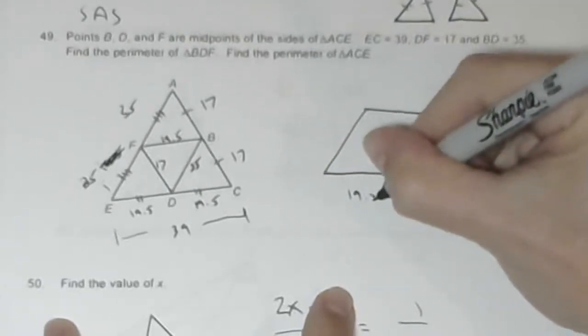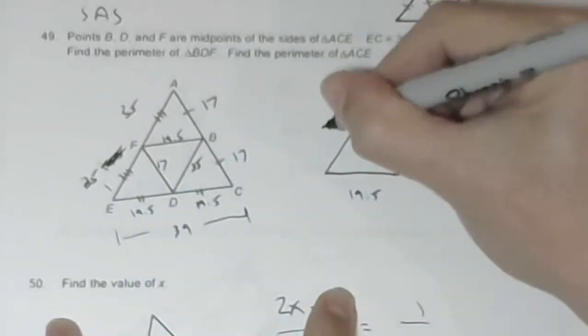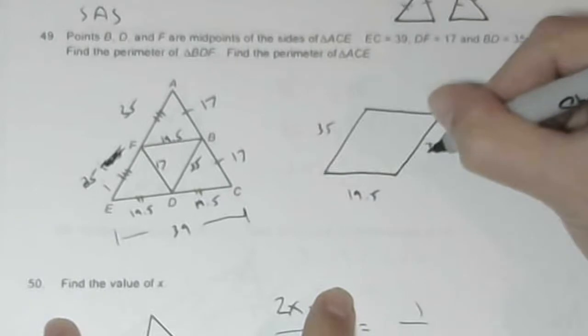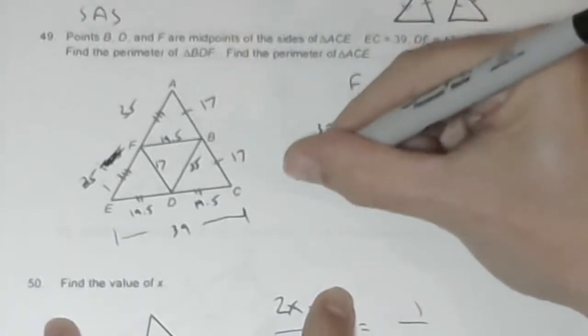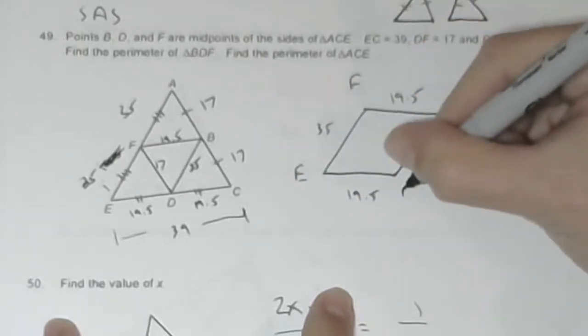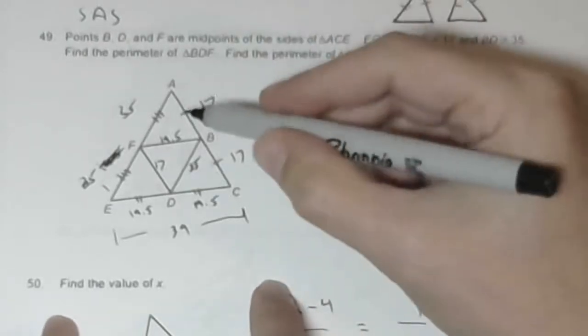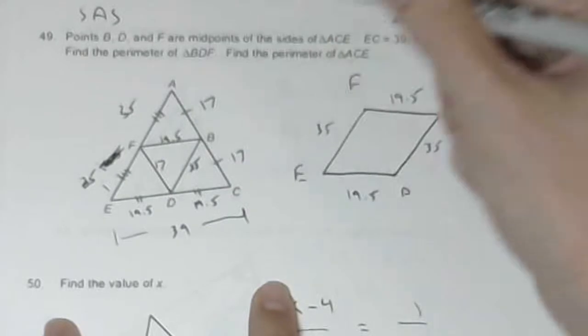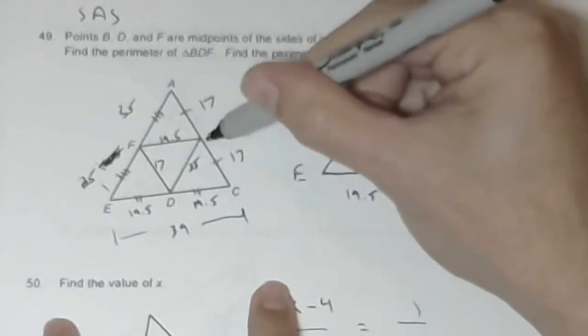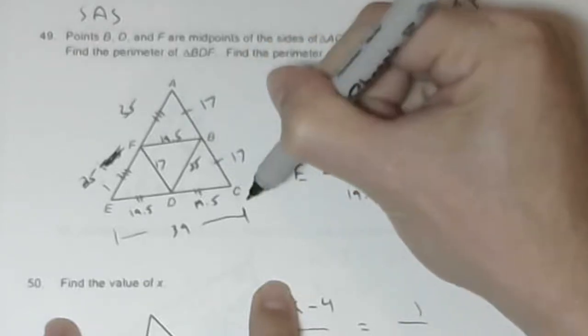This is 19.5. If BD is 35, then these are both 35. So this top one is 19.5. This is F, E, D, B without the diagonal, so this is 35. EF is 35, FA is 35. This is 17, BC is 17, AB is 17, because B is the midpoint of AC.